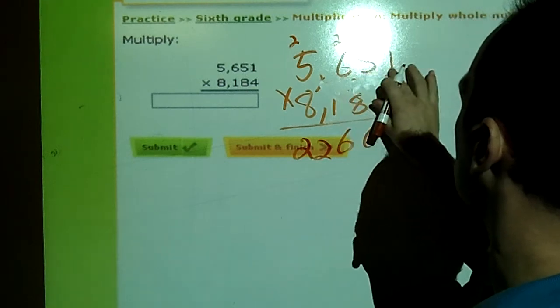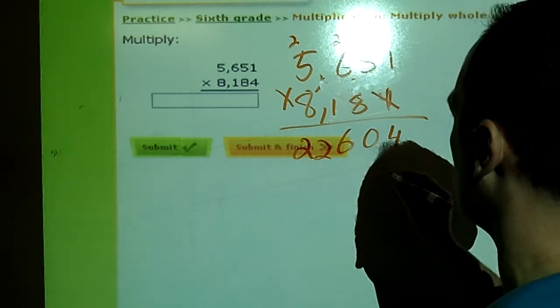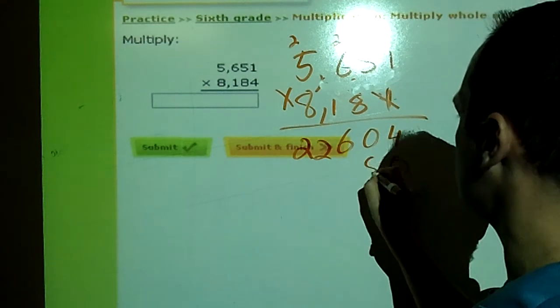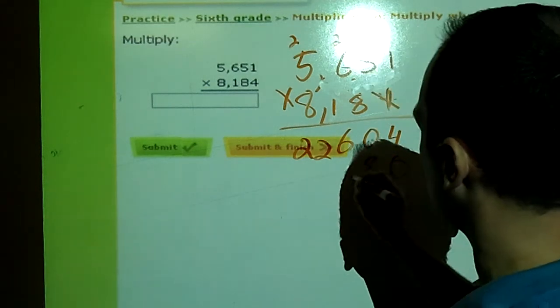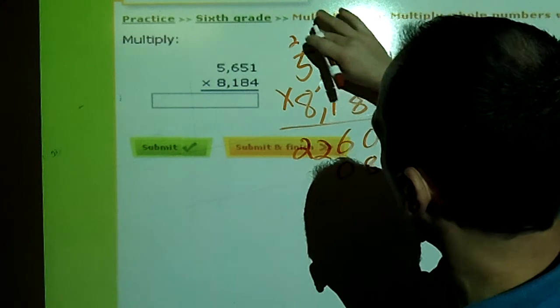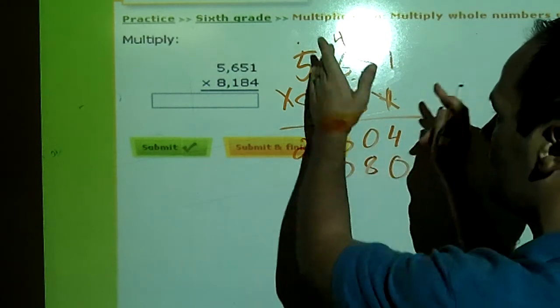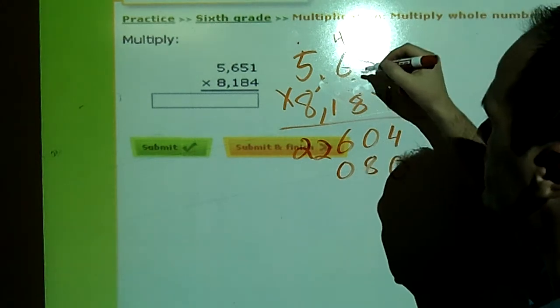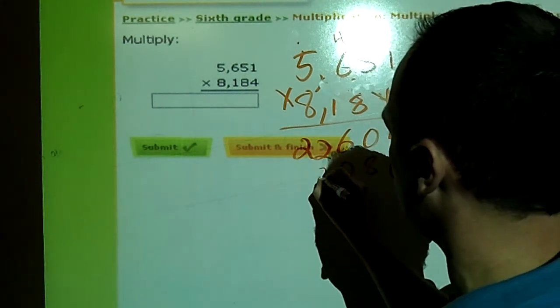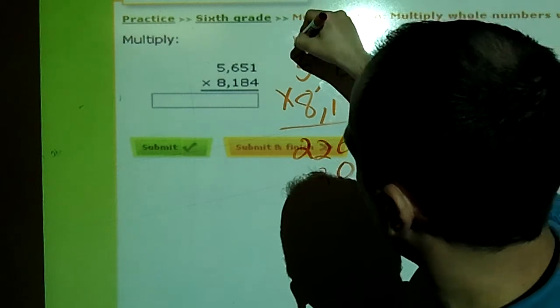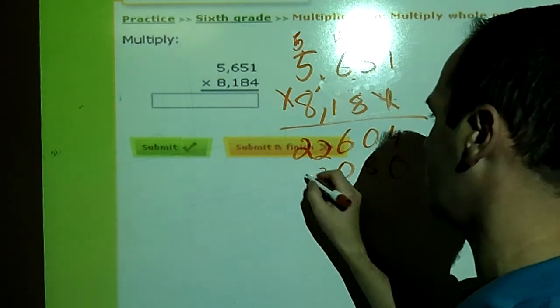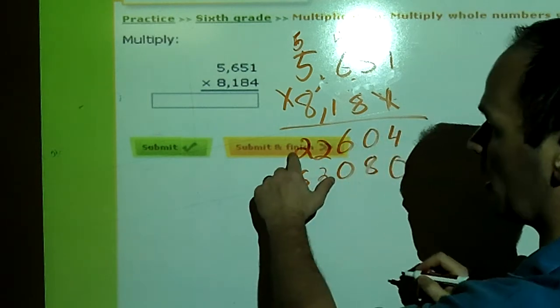Let's do the next one, eight. So since it's done, I got to put a zero there. Eight times one is eight, eight times five is forty, carry my four. Now because that forty, the zero goes here, the four goes up. So eight times six is forty-eight, 48 plus four more is fifty-two, carry my five. Now eight times five is forty plus five more, forty-five.